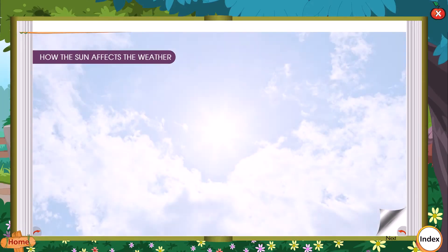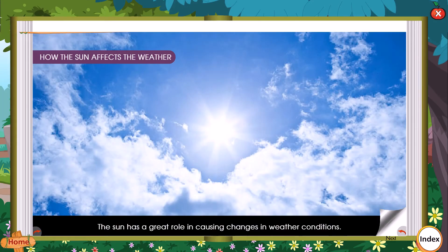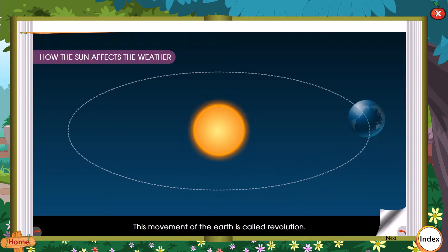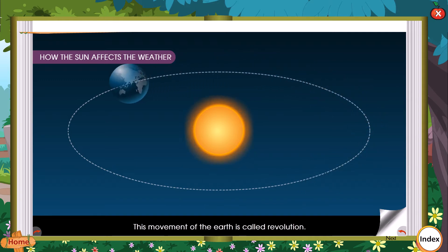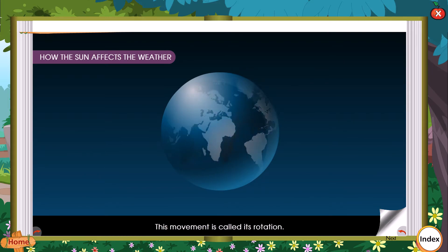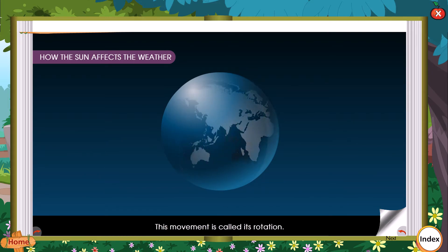The sun has a great role in causing changes in weather conditions. We know that the earth goes round the sun. This movement of the earth is called revolution. The earth also moves on its axis. This movement is called its rotation.